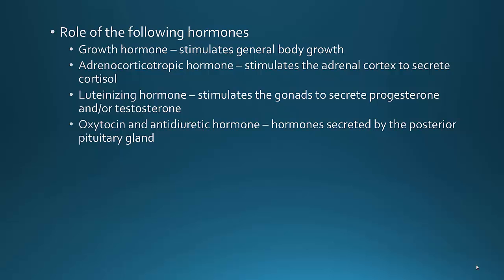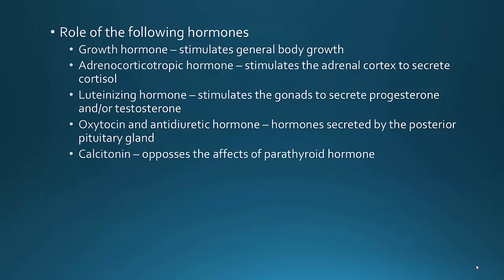Oxytocin and antidiuretic hormone — what you need to know about these two is that they are the two hormones secreted by the posterior pituitary gland. Calcitonin opposes the effects of parathyroid hormone. Remember, calcitonin and parathyroid hormone are both important in calcium levels, but they are opposites — calcitonin does the opposite of parathyroid hormone.